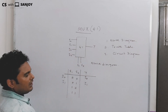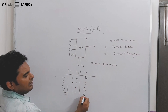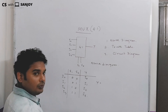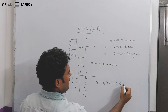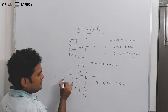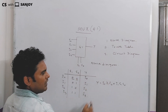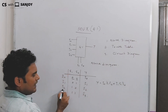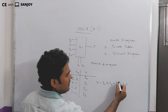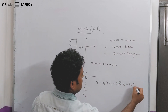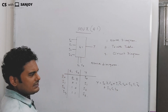So the Boolean expression for output Y is: Y = I0·S1̄·S0̄ + I1·S1̄·S0 + I2·S1·S0̄ + I3·S1·S0. This is the complete Boolean expression for the 4-to-1 multiplexer.